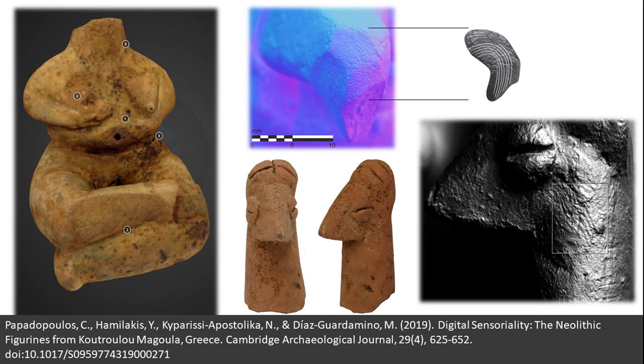These are three figurines from the Neolithic site of Kuturlou Magoula in central Greece. RTI was capable of capturing very subtle surface marks, including fingerprints, in great detail. The fingerprints seemed to be chance prints unintentionally created in the process of handling the clay and moulding the figurine. Most of the fingerprint areas seem to have been intentionally erased as part of the smoothing of the figurine surface, which in some instances was done with a brush, as indicated by the marks of very fine brush strokes identified.